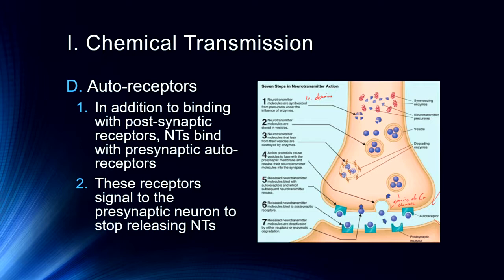Autoreceptors can be targets for drugs. For example, cocaine has an effect on the autoreceptor so that more dopamine is released. Cocaine is also a dopamine reuptake inhibitor, so it dramatically increases the amount of dopamine available in the synapse.